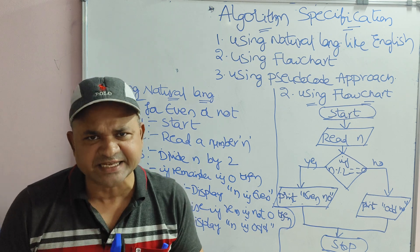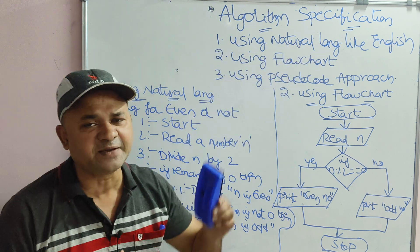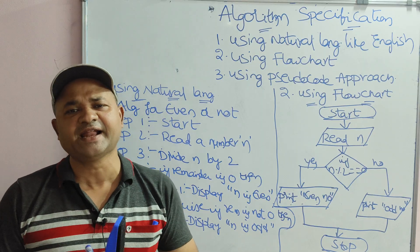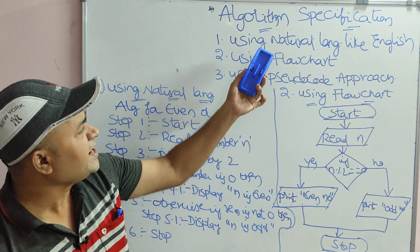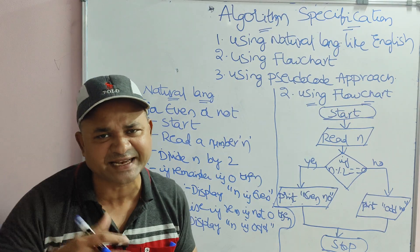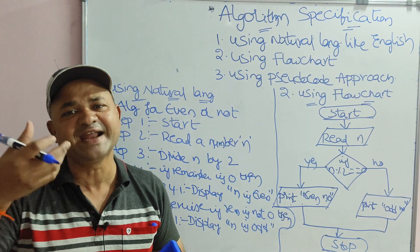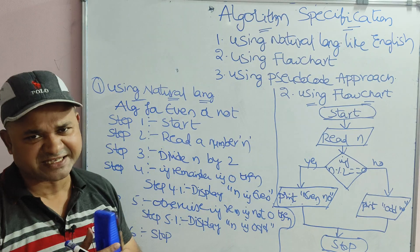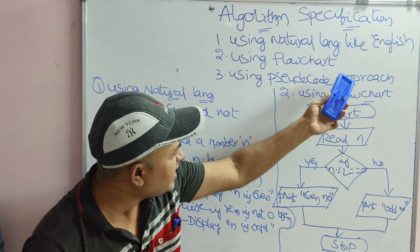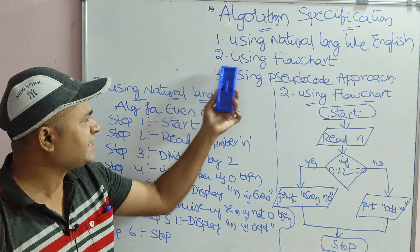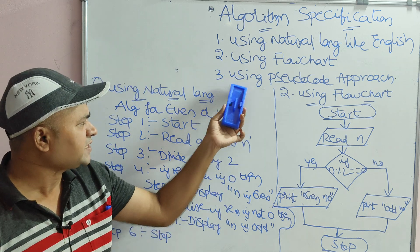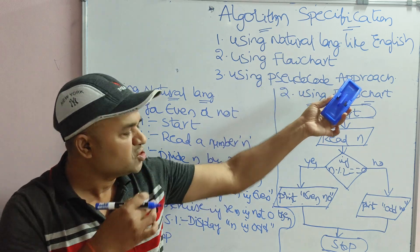Let us discuss about algorithm specification in design and analysis of algorithms. Generally, we can specify or describe an algorithm in three ways. The first approach is using natural language like English. The second approach is using flowchart. The third approach is using pseudocode.